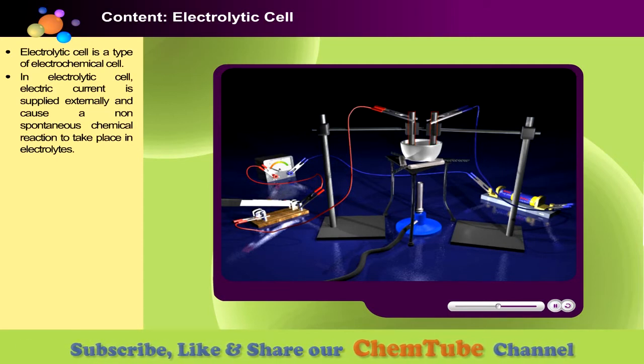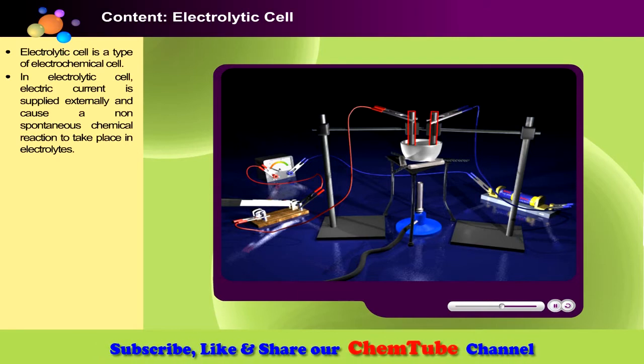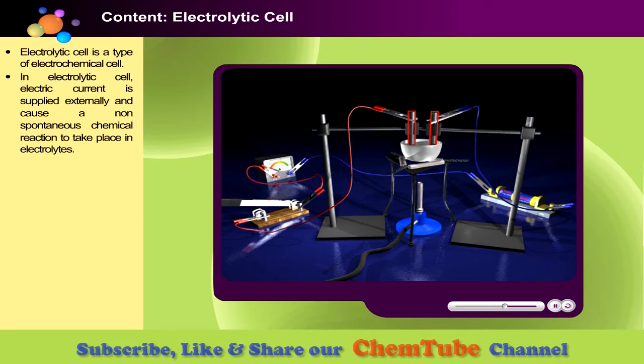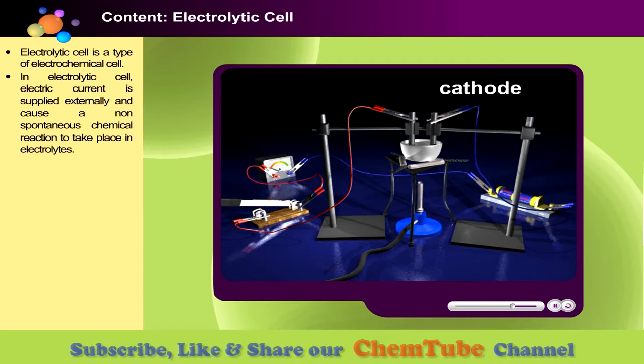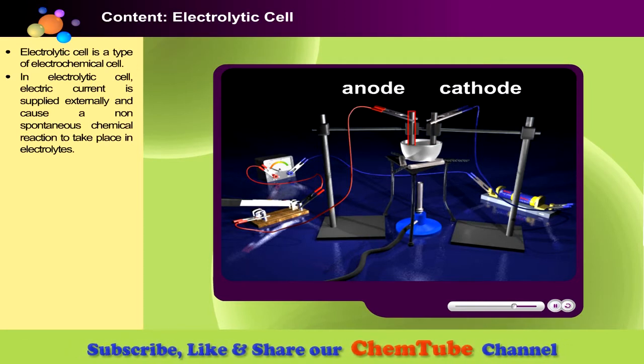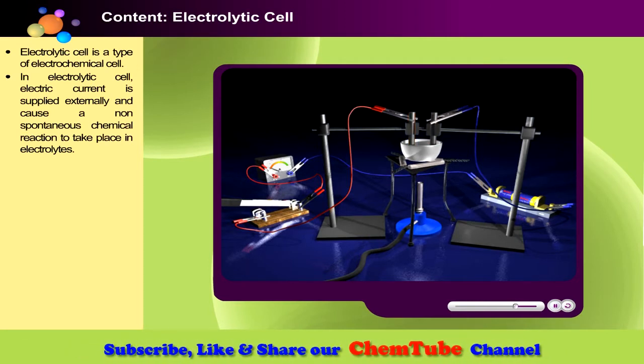Now look closely at these carbon rods in this setup. Each carbon rod has their own name. Do you know what they are called? Both carbon rods are electrodes. The one attaches to negative terminal of a battery is called cathode, and the one attached to positive terminal of a battery is called anode.